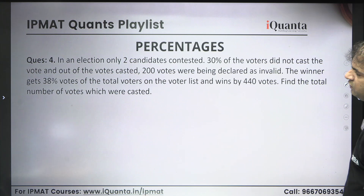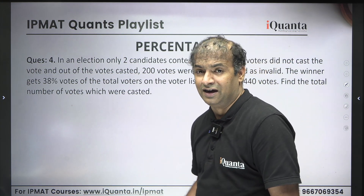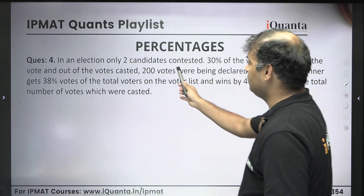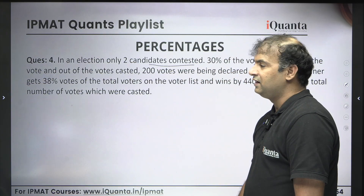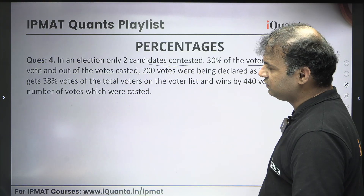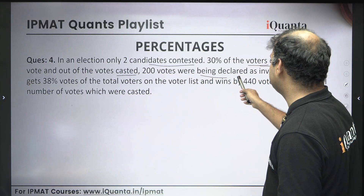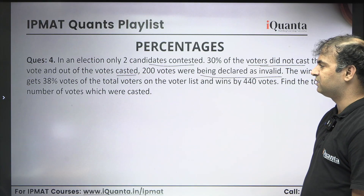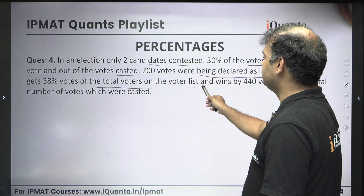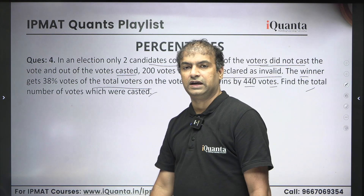Coming to one more question — a very good question based on elections. This is one of the very important questions in this topic. In an election, there are only two candidates being contested. 30% of the voters did not cast their votes. Out of the voters who casted the vote, 200 votes were declared as invalid. The winner gets 38% votes of the total voters on the voter list and wins by 440 votes. We need to find the total number of votes which were casted.